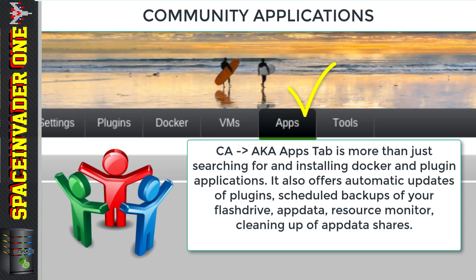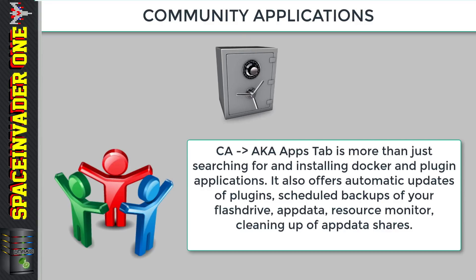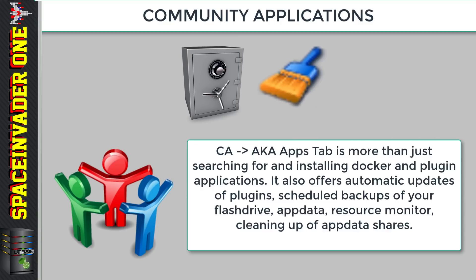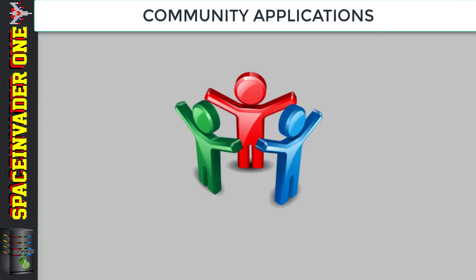CA installs applications, but it can also automatically update the plugins and docker containers after they've been installed. And to keep us safe, CA can also back things up for us — it can back up our appdata folder and even clean and remove appdata folders from containers that we've long since deleted. With VMs, it can automatically back up our XML and LibVirt image as well. In fact, CA can even make full backups of your flash drive. So let's install each plugin and look at all of its features in detail.